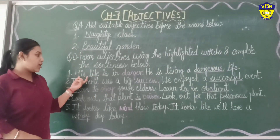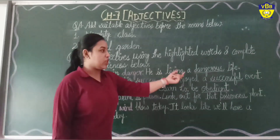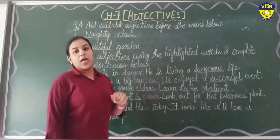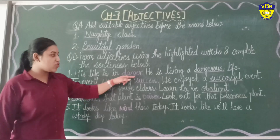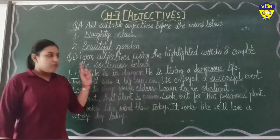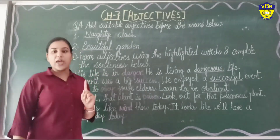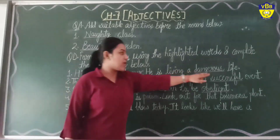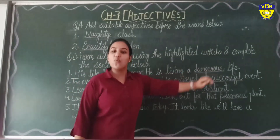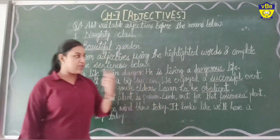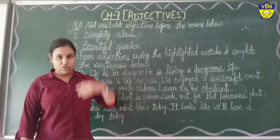First sentence: 'His life is in danger' becomes 'He is living a dangerous life.' The word 'danger' is given. To form an adjective, we add the suffix -OUS and we get the adjective 'dangerous.'